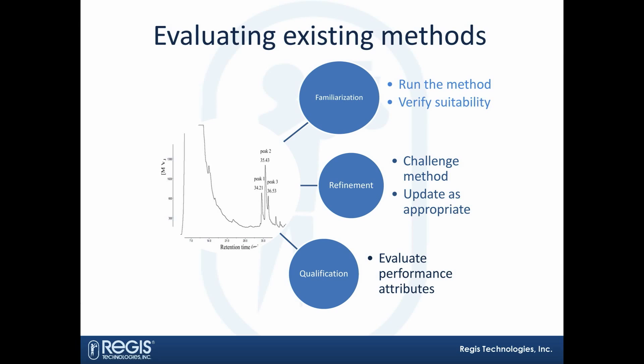As a contract facility, we have a lot of customers that give us methodology. They will claim that their method is great, or they may say, we think it's okay, but let us know. So what we have to do is evaluate it. You need to have all the relevant markers and know your targets. We familiarize ourselves with the method, refine it if necessary, and do some kind of qualification. As a contract facility, we always engage in good communication — if we make changes, we'll explain what we were given, what we changed, and justify it. That's more customer service than science, but that's how it's done.